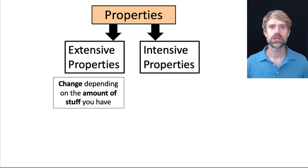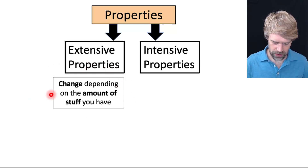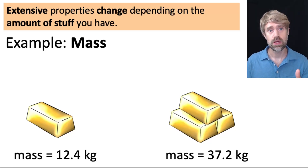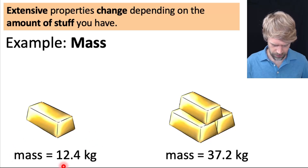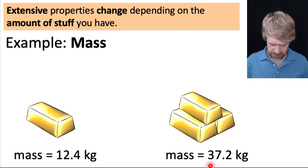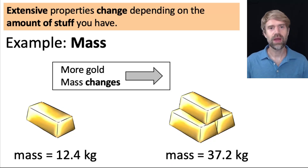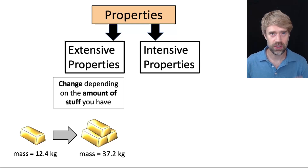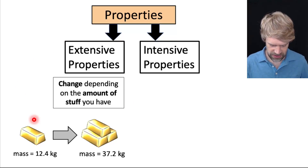Now there's another way that we can sort properties. We can divide them up into extensive properties or intensive properties. Extensive properties change depending on the amount of stuff you have. An example of an extensive property is mass. One gold bar here weighs 12.4 kilograms; three gold bars weigh 37.2 kilograms. So when you have more gold, the mass goes up. Mass depends on the amount of stuff you have, so mass is a good example of an extensive property.